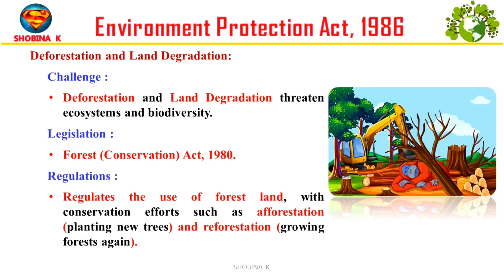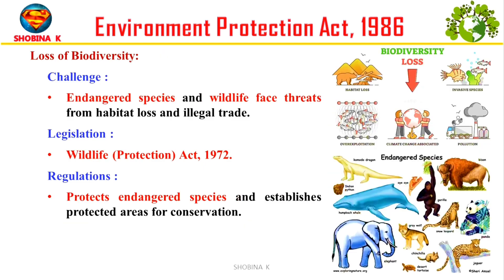Deforestation and land degradation — cutting down trees and ruining land — harms nature and biodiversity. To stop this, there is the Forest Conservation Act, 1980, which decides how forests are used and encourages planting new trees and regrowing forests. To protect biodiversity, many animals and plants are in danger because their habitats are disappearing and people are trading them illegally. The Wildlife Protection Act, 1972 protects endangered species and sets up safe zones to conserve them.